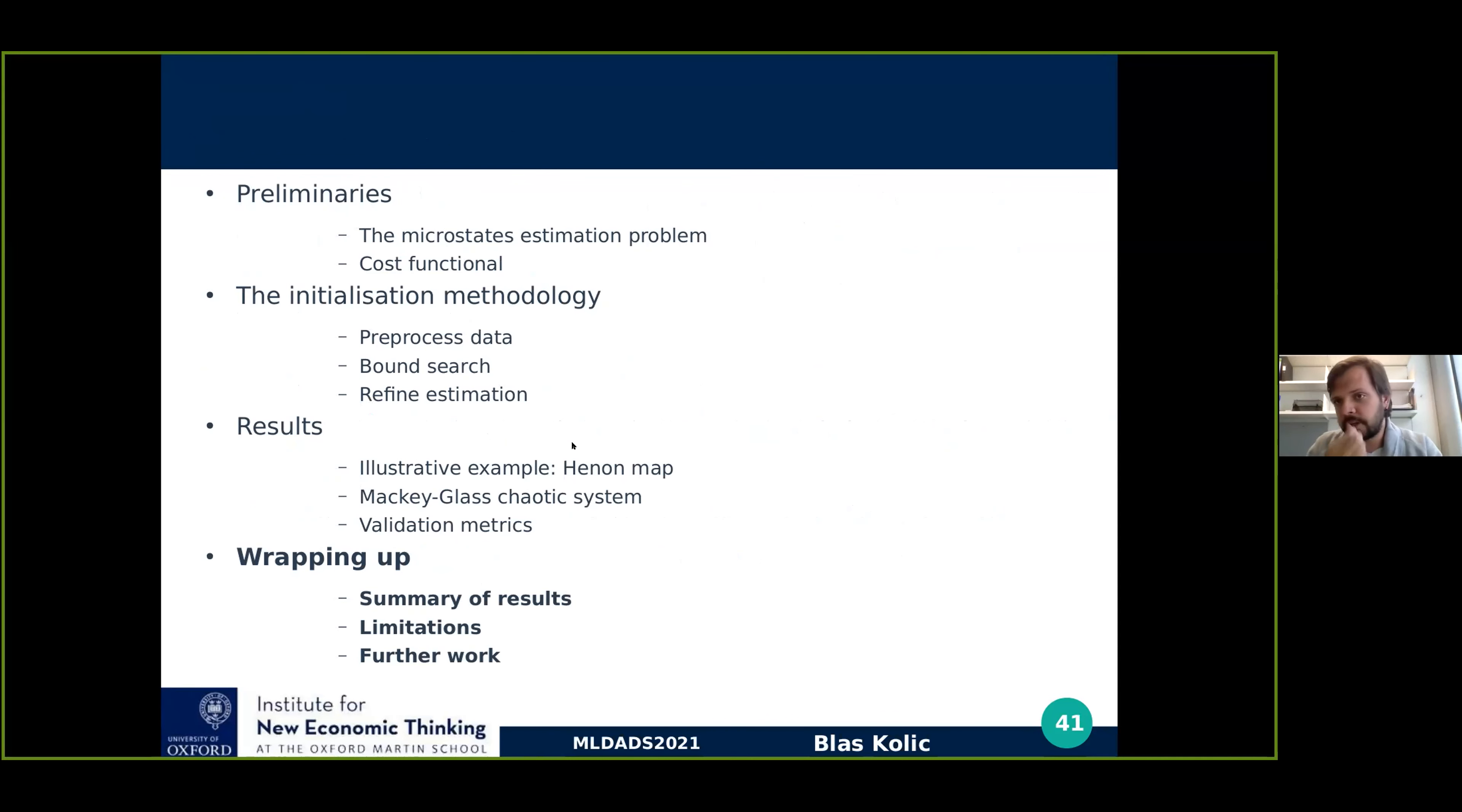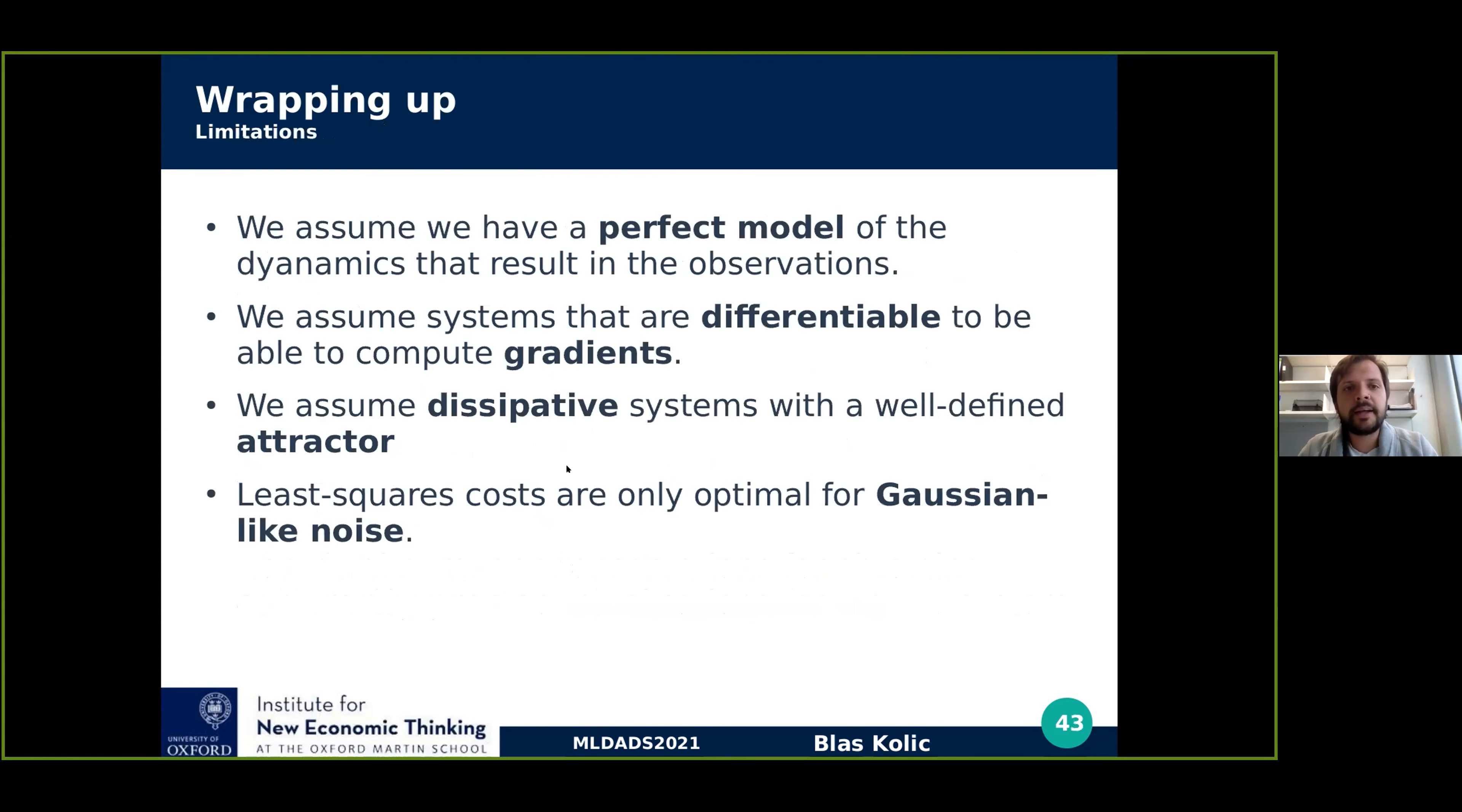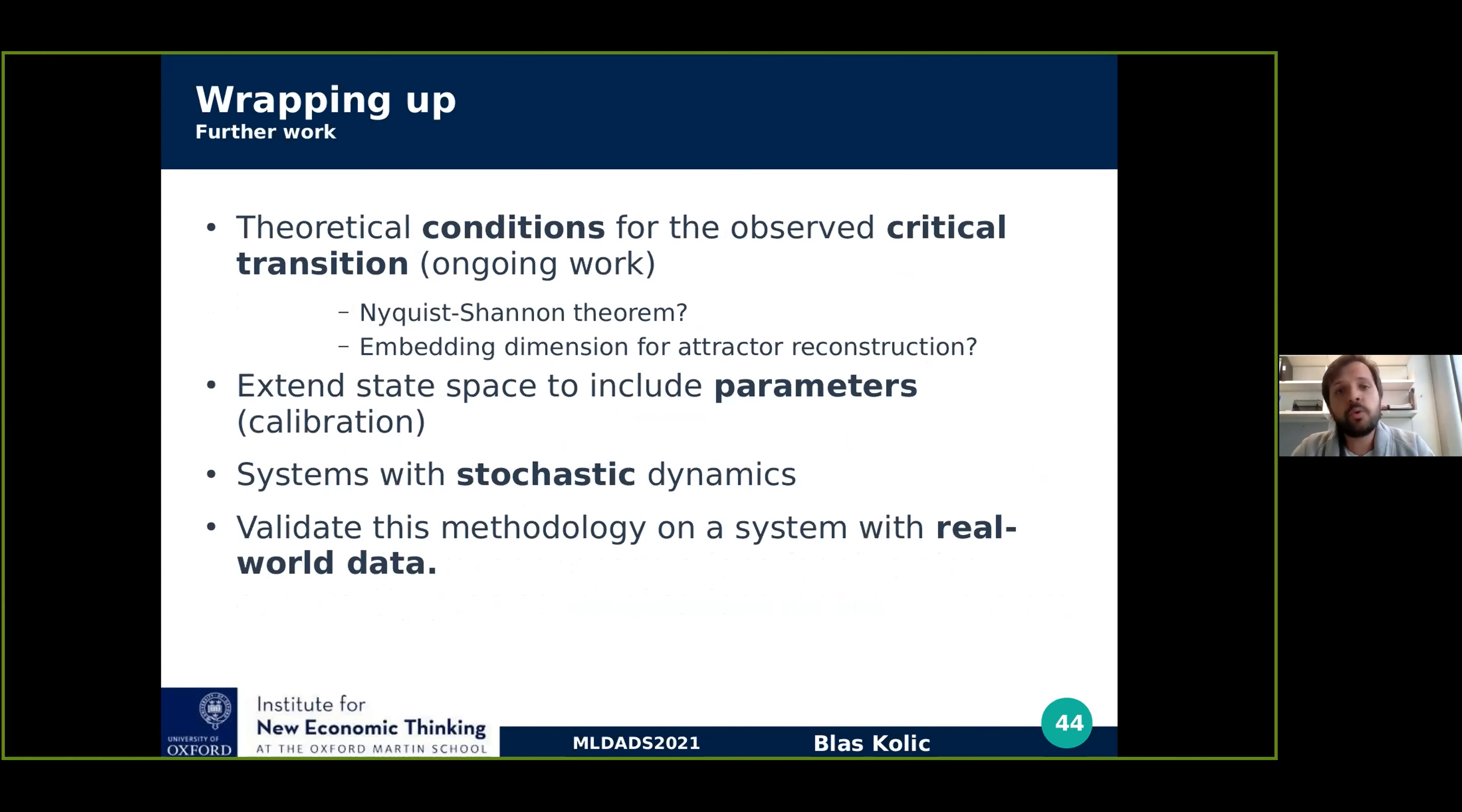Just to wrap up, a summary is that we presented a three-step method that accurately infers latent initial microstates from aggregate noisy data. When we have a model, we find that Adam descent outperforms all of the other alternatives. And we find a non-linear and non-trivial number of observations for obtaining arbitrarily precise macrostate estimations for the Mackie Glass system. There are some limitations. Of course, we assume perfect models. We assume some differentiability to be able to compute gradients. We assume that the systems considered were dissipative and relaxed into a well-defined attractor. And we used the least squares cost that's only optimal for Gaussian-like noise.